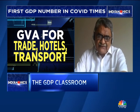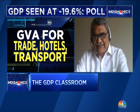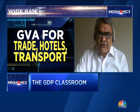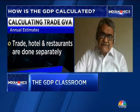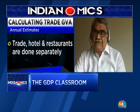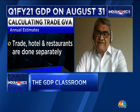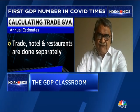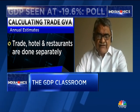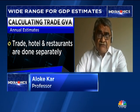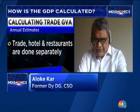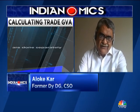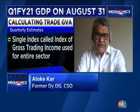Then there remains a large part which is the unorganized sector — unincorporated enterprises. For this, the CSO doesn't have annual data. Its estimates are based on surveys conducted once in five years. Some changes are going to take place soon where these surveys will be conducted every year. But as it stands now, data on this large unorganized sector is not available annually, and it is extrapolated from a benchmark estimate from some three or four years ago.